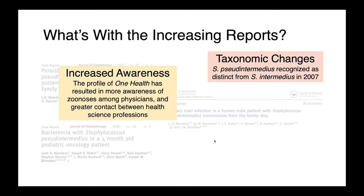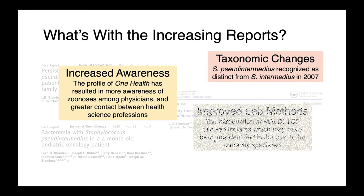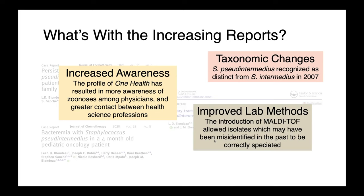There's increased awareness of zoonotic transmission among both physicians and veterinarians. The One Health movement has really made these types of infections more top of mind, and there's greater contact between people working in different silos of the health sciences — myself as a veterinarian working with infectious disease physicians, for instance. We also have improved diagnostics: the introduction of MALDI-TOF in human diagnostic labs may have allowed isolates which were previously misidentified to be correctly speciated. Staph pseudintermedius has probably been there all along and we just didn't have the tools to identify it.